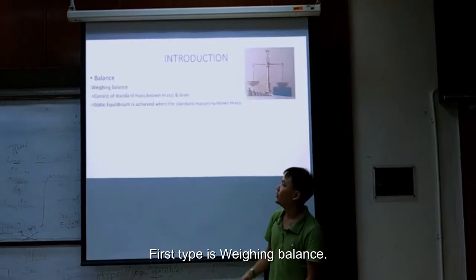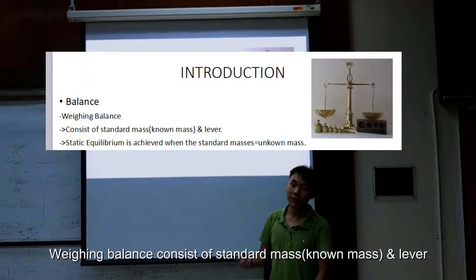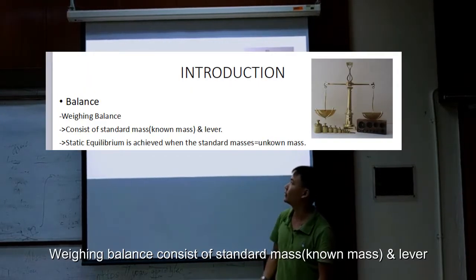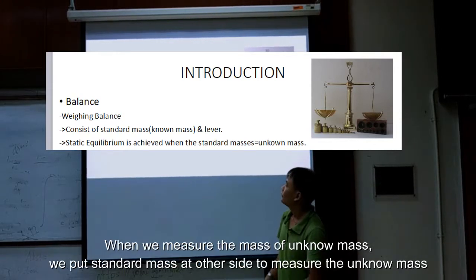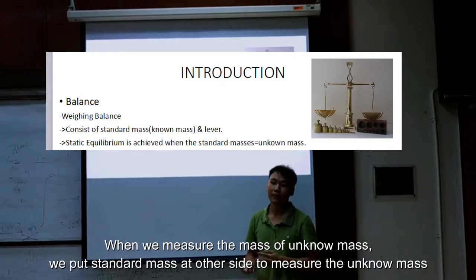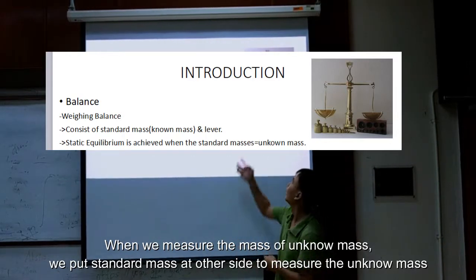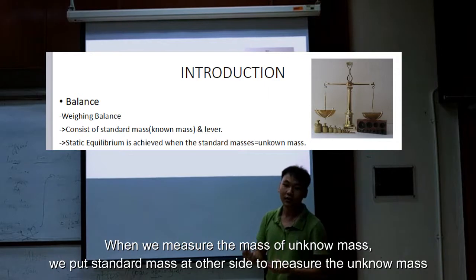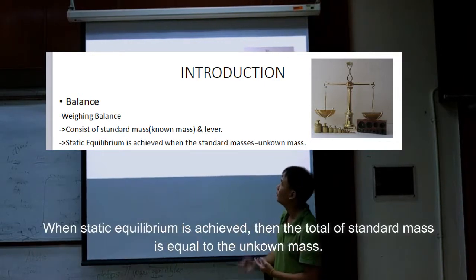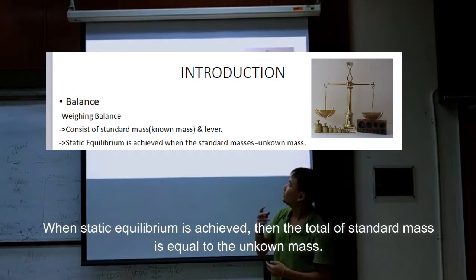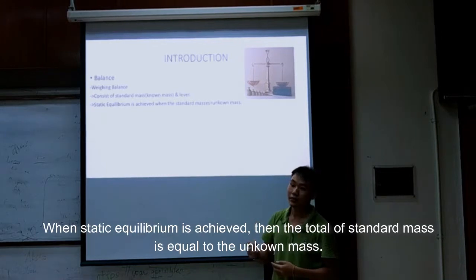First type is weighing balance. The weighing balance consists of standard mass and lever. When we measure the mass of unknown mass, we put the standard mass on the other side to measure the unknown mass. Static equilibrium is achieved when the standard mass is equal to the unknown mass.